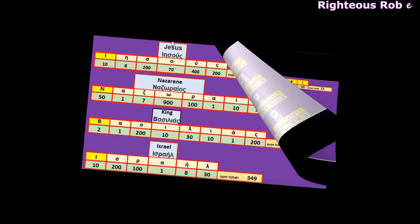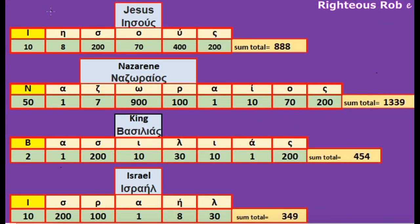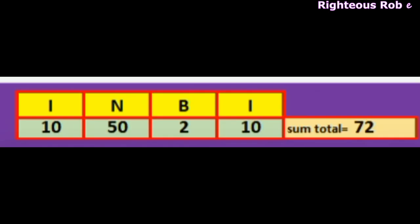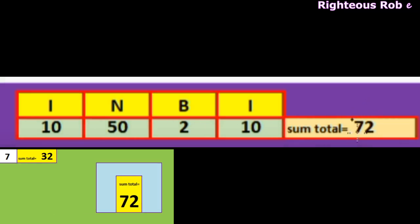The sign above the head of Jesus on the cross in Greek: Jesus, Nazarene, King, Israel — INRI. The acronym for the sign, the acronym of the words Jesus the Nazarene, King of Israel, that hung above the head of Jesus on the cross — the acronym encoded with Greek letters — has a sum total of 72.